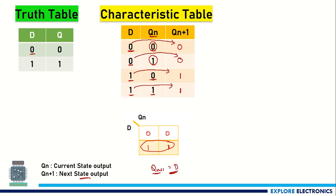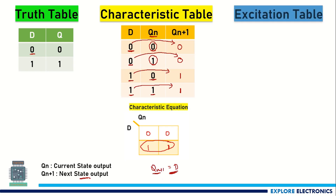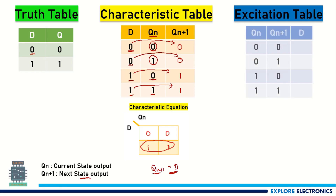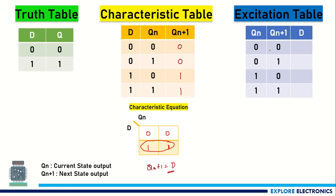This is the characteristic expression. Coming to the excitation table — how to write it? We need to take the present state Qn and the desired next state Qn+1, and determine what D input is required. That is the excitation table. For Qn equal to 0 and Qn+1 equal to 0, we look in the characteristic table for 0, 0 — the D value there is 0. So we write D as 0.